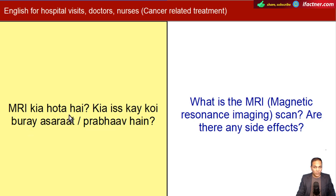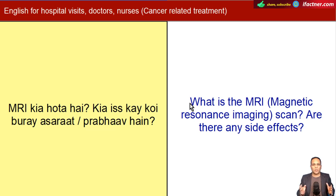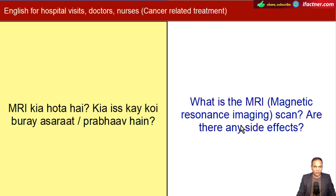MRI scan kya hota hai? Kya is ke koi buray asaraat hain? MRI basically hota hai Magnetic Resonance Imaging, jis ke zariye body ka pura scan kiya jata hai - dekha jata hai ki kahin pe aur to nahi, kahin tumor barh raha ya ban raha. Yeh information main aap ko as a lay person bata raha hoon. To jo bhi doctor kahe us surat mein patient ko aur uske relatives ko pata hona chahiye. English mein: What is the MRI scan? What is the Magnetic Resonance Imaging scan? Are there any side effects?